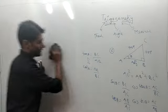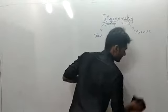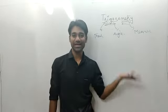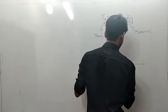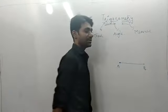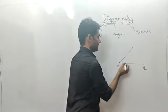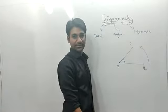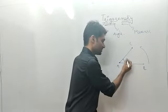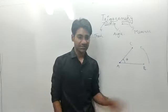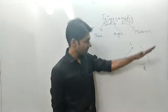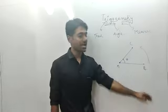So what is the angle? The angle is the amount of rotation. This is the initial position of the line segment, and we rotate it. If we rotate AB in the anticlockwise direction, then this angle will be positive.